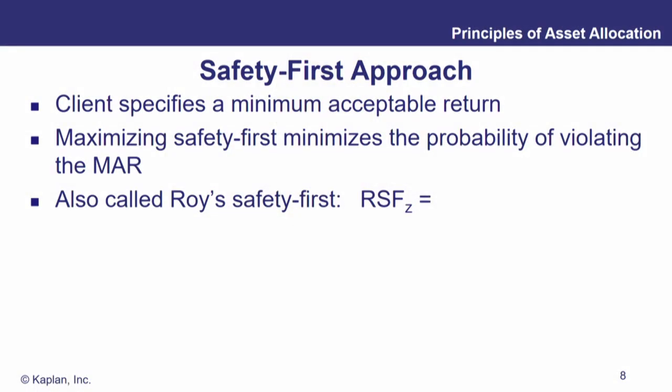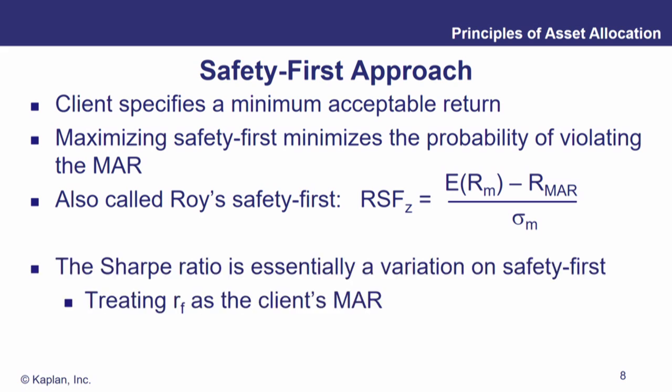Next is the safety first approach. If a client — say a pension fund — absolutely needs to earn a minimum rate of return so that checks go out on time and the surplus is maintained, you structure the portfolio to minimize the probability of violating that minimum acceptable return. This is called Roy's safety first criterion, and it equals: [E(R_m) − minimum acceptable return] / σ_m. This looks a lot like the Sharpe ratio — if you replace the minimum acceptable return with the risk-free rate, it becomes the Sharpe ratio.